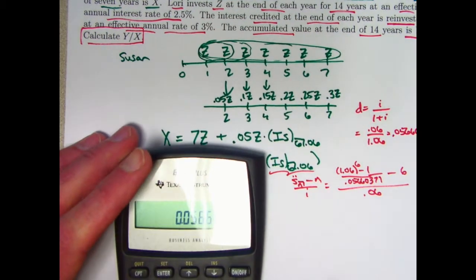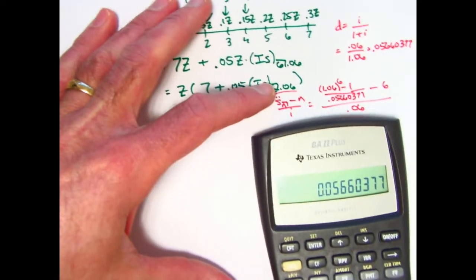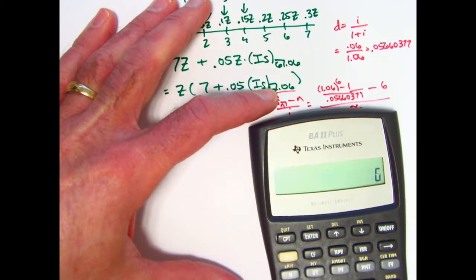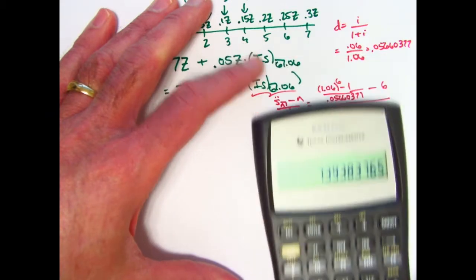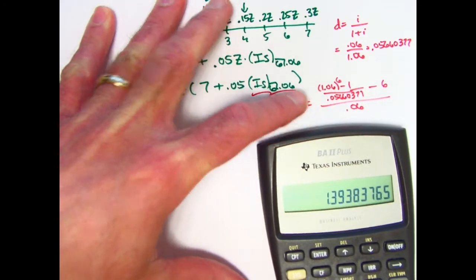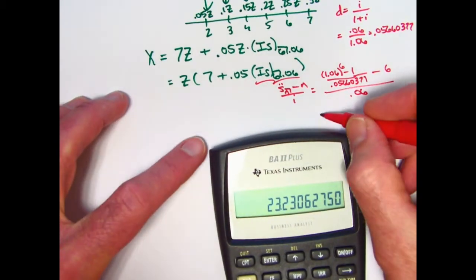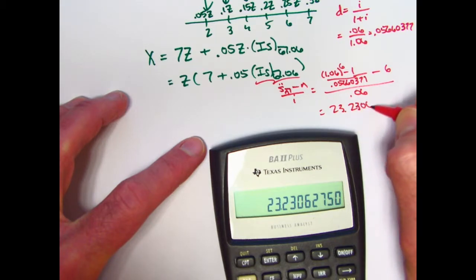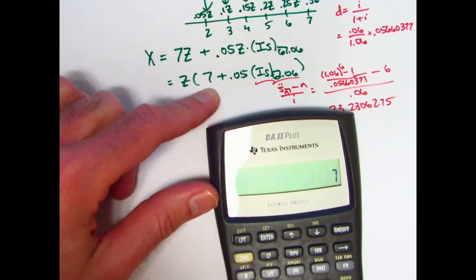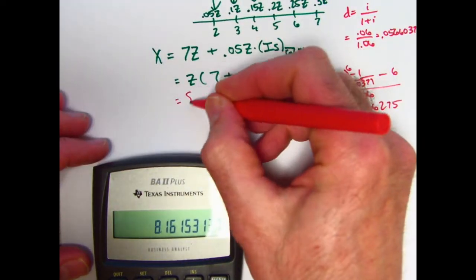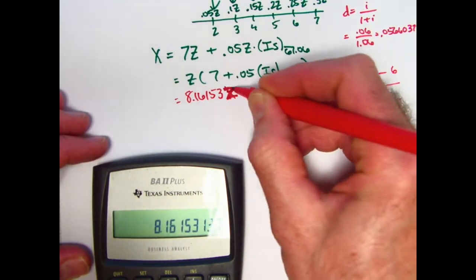Let's go ahead and do this. I'm going to store the value of D in register 0. Let's do 1.06 to the sixth power minus 1 divided by D, which is stored in register 0, subtract 6, then divide by 0.06. This quantity is 23.2306275. Multiply that by 0.05, add 7. Looks like what we have here is 8.16153 times Z. That's what X equals.